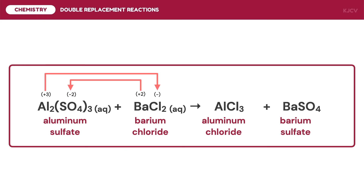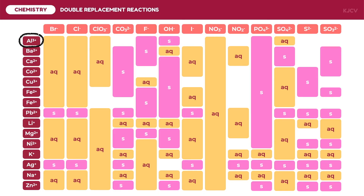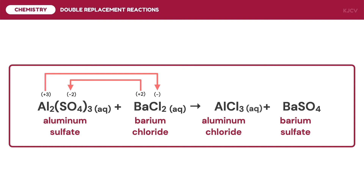Now let's determine which between the two products will be the precipitate. For aluminum chloride, aluminum paired with chloride to form an aqueous product. For barium sulfate, barium paired with sulfate to form a solid product. Thus, the precipitate of this reaction is barium sulfate. We denote aluminum chloride as the aqueous product and barium sulfate as the solid product. For the complete balanced reaction: one mole of aluminum sulfate reacts with 3 moles of barium chloride to form 2 moles of aluminum chloride and 3 moles of barium sulfate.